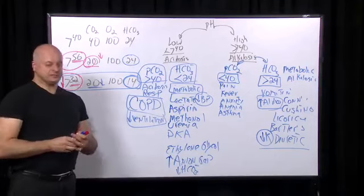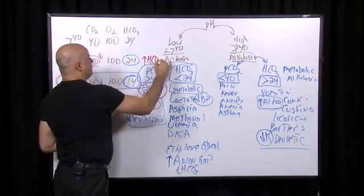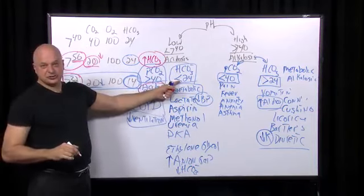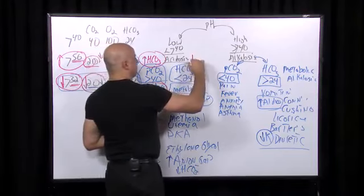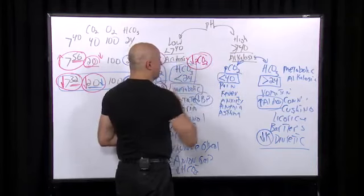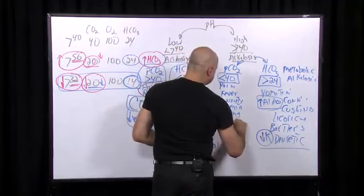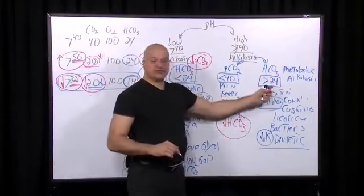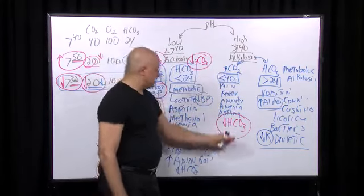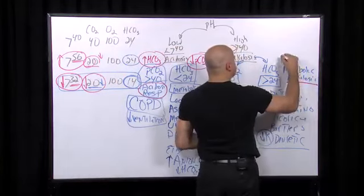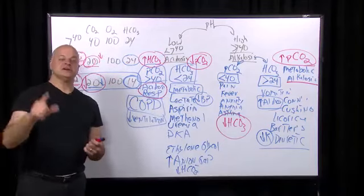Regarding compensations: the compensation for respiratory acidosis is metabolic alkalosis (high bicarbonate). The compensation for metabolic acidosis is respiratory alkalosis (decreased pCO2). The compensation for respiratory alkalosis is metabolic acidosis (kidneys excrete bicarbonate). The compensation for metabolic alkalosis is respiratory acidosis. In general: metabolic problems are compensated by respiratory changes, and respiratory problems are compensated by metabolic changes.